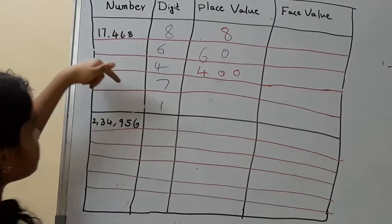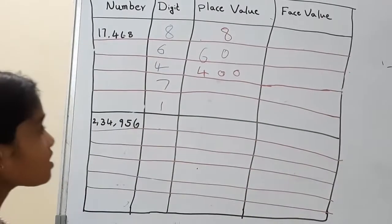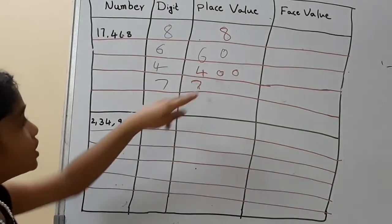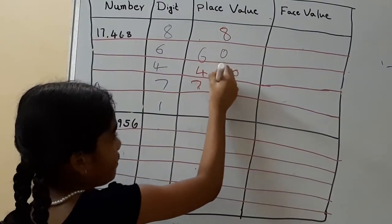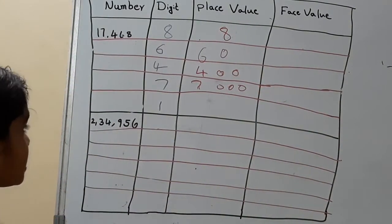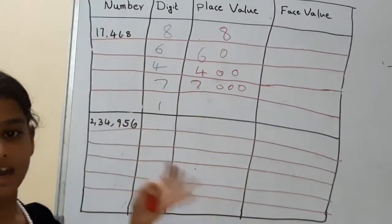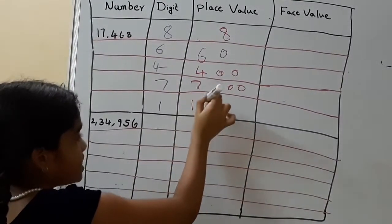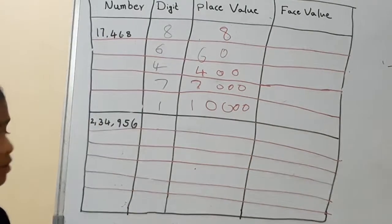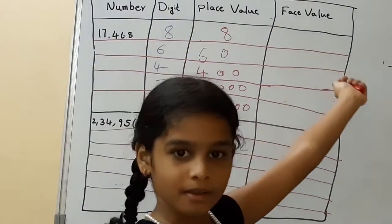And what is the base value of 7? So it is 1,000, so I will keep 7 and I will put three 0's. And what is the base value of 1? It is 10,000, so I will keep 1 and I will keep it in that 4th place. So now let's set the face value.